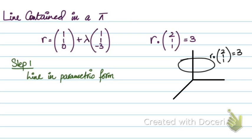There are two methods of doing this — we'll do both methods in this video. The first one requires you to first write down your line equation into parametric form. So the parametric form for this line will be (1 + lambda, 1 + lambda, minus 3 lambda).